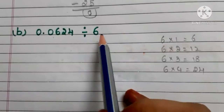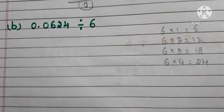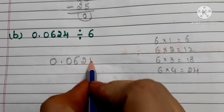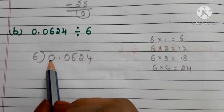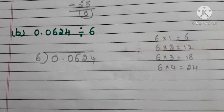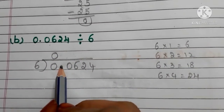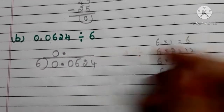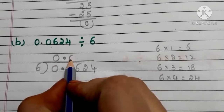Now let us solve another problem. Here we have 0.0624 divided by 6. First, arrange like this: 0.0624 divided by 6. In the dividend 0.0624, the whole number part is 0, so we write 0 in the quotient first. Since there is a decimal point after 0, we put the decimal point in the quotient. After the decimal point, there is another 0, so we write 0 again in the quotient.